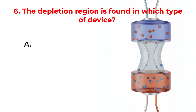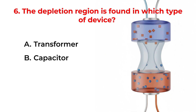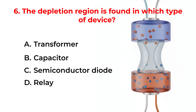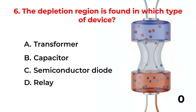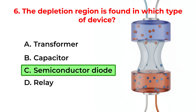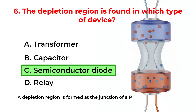The depletion region is found in which type of device? A. Transformer. B. Capacitor. C. Semiconductor diode. D. Relay. The correct answer is Option C: Semiconductor diode. A depletion region is formed at the junction of a P-N diode, acting as a barrier to charge carriers.